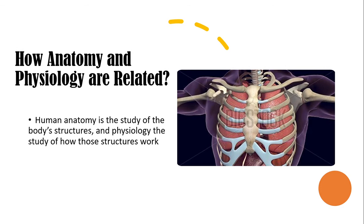How are anatomy and physiology related? Human anatomy is the study of the various structures, and physiology is the study of how those structures work. For instance, here we have an image of the thoracic cage. The thoracic cage is the skeletal framework of the thoracic wall, which encloses the thoracic cavity. It consists of thoracic vertebrae, discs, ribs, cartilage, and the sternum. That is the structure of the thoracic cage.